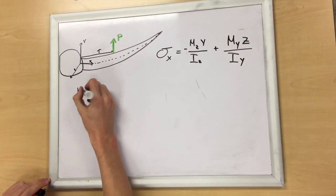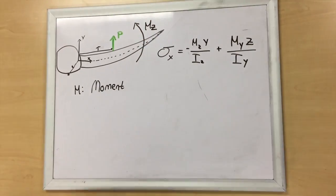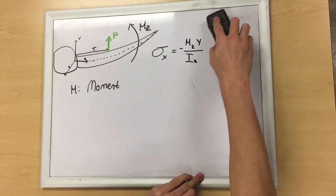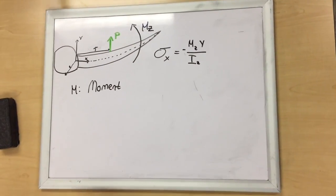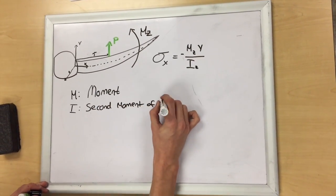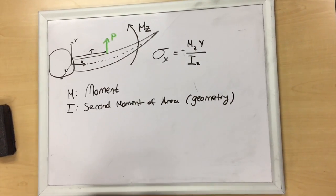The total normal stress due to bending on the wing is given by this equation. As shown, the moment acts in a counterclockwise direction around the Z axis. This means that we can ignore the second part of the equation, which takes into account the moment around the Y axis. In this equation, M is the bending moment created by lift. I is the second moment of area which is a geometric property and can be calculated easily.